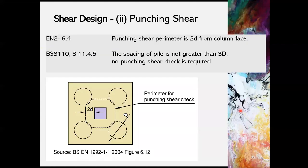Punching shear is another shear design criteria. Eurocode 2 section 6.4 recommended that the punching shear parameter is 2D from column face as is illustrated in figure 5. There is a clear guideline from BS8110, clause 3.11.4.5, stated that if the spacing of pile is not greater than 3D, which in this case is 3D, no punching shear check is required.